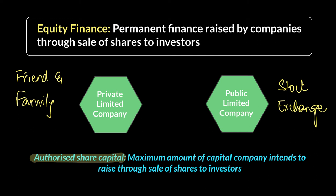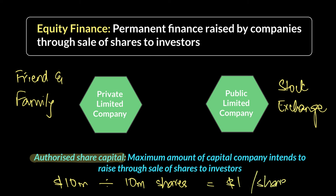For example, if a company needs to raise 10 million dollars and decides to sell 10 million shares, each share will be worth one dollar. It could be any numerical combination, but authorized share capital tells you the amount you intend to raise, and from that you decide the number of shares to sell. Both private and public companies can do this — it's like selling a part of the company in return for finance.